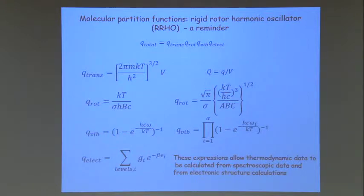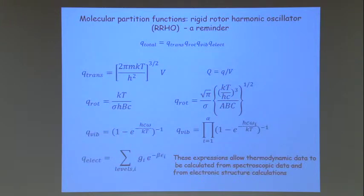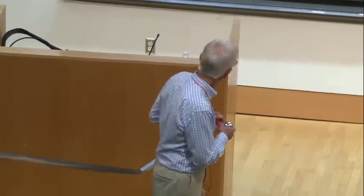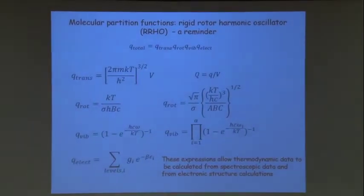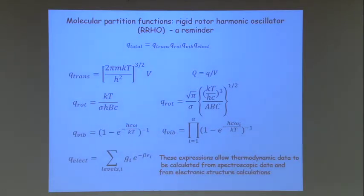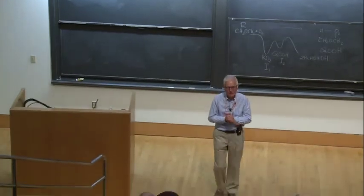The standard molar entropy is the entropy of one mole of a substance in its standard state based on the third law. The entropy increases as dS/dT equals Cp over T — if you plot Cp/T versus temperature, the entropy is given by that curve. We can also use partition functions to calculate thermodynamic data, giving expressions for energies, entropies, Helmholtz free energies and Gibbs energies. These expressions allow thermodynamic data to be calculated from spectroscopic data and from electronic structure calculations — often a more precise approach than available experimental data, especially for radicals.